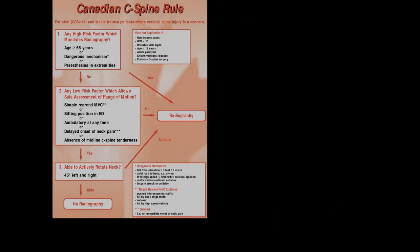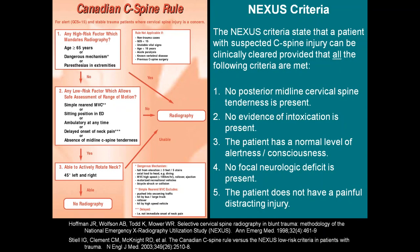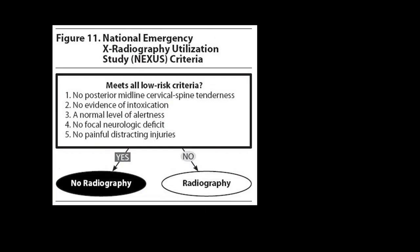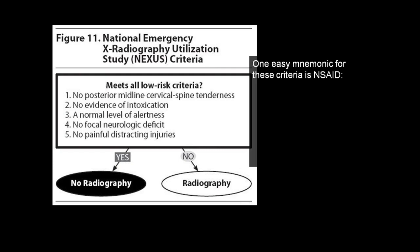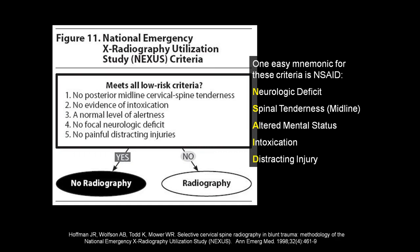Two rules here: the Canadian C-spine rule and Nexus criteria. Nexus has five criteria, and you must meet all five for the rule to apply: no posterior midline cervical spine tenderness, no evidence of intoxication, a normal level of alertness, no focal neurologic deficits, and no painful distracting injuries. If you can say yes to all of those, no imaging is needed. A helpful mnemonic is NSAID: Neurologic deficit, Spinal tenderness, Altered mental status, Intoxication, and Distracting injury.